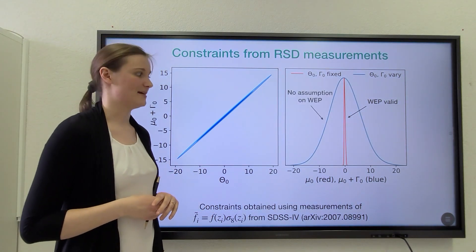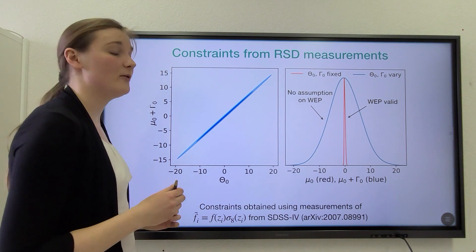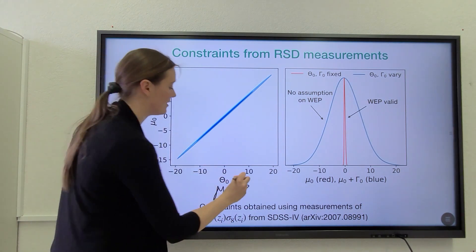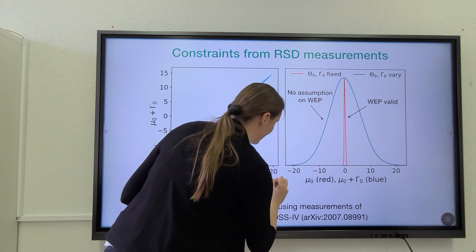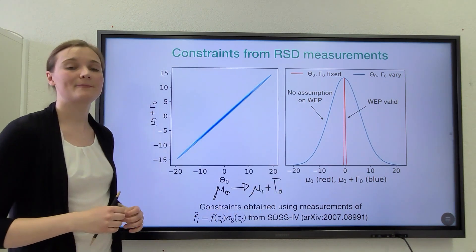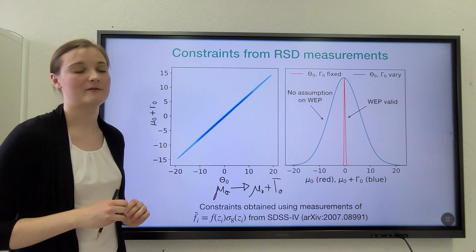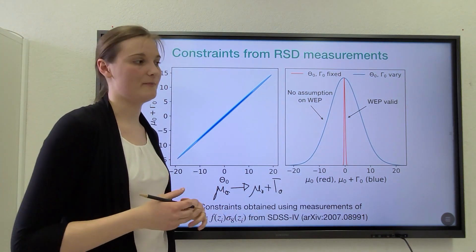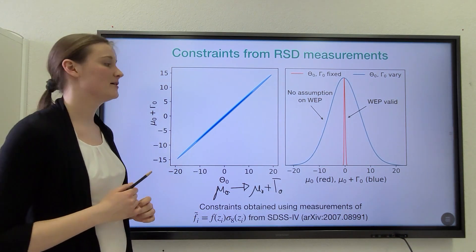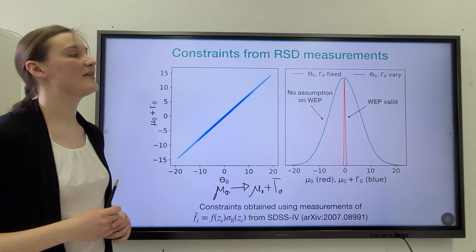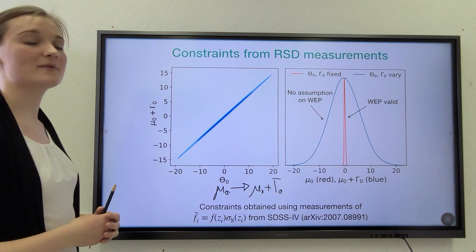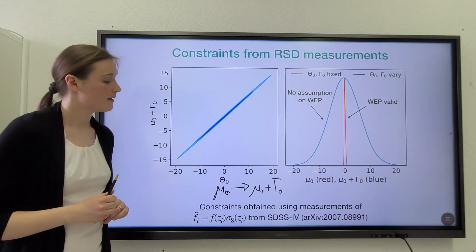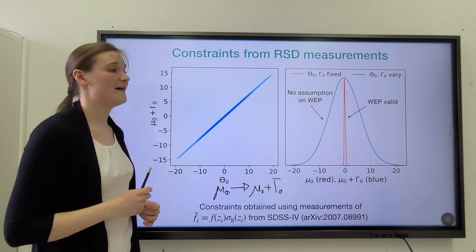Now, what happens if we relax this restrictive assumption? Actually, two things happen. First of all, we cannot constrain the parameter mu alone anymore. We can only constrain the combination mu plus gamma zero, as these two parameters are completely degenerate in the evolution equation for delta. And then we see that the constraints on the combined parameter are a lot worse than the constraints of mu zero in the previous case. And the reason for that is clearly visible from the left plot. There is additionally a very strong degeneracy with the friction parameter theta. And this means that our constraints actually get by a factor of 30 worse.